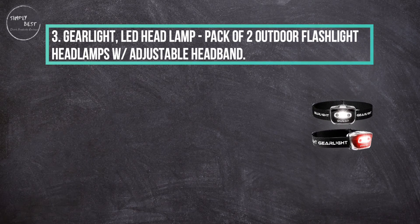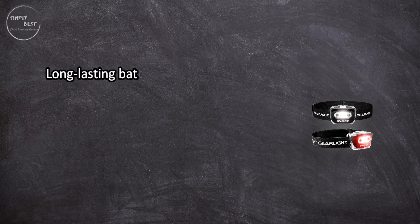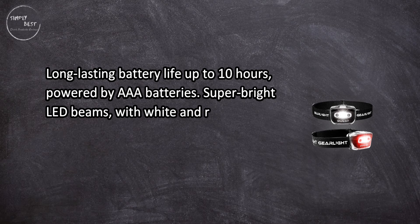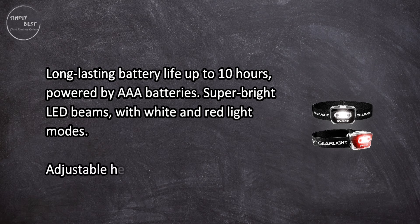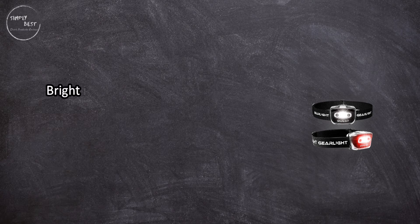At number three, Gearlight LED headlamp, pack of two outdoor flashlight headlamps with adjustable headband. Long-lasting battery life up to 10 hours, powered by AAA batteries. Super bright LED beams with white and red light modes, adjustable headband and 45 degree angle tilting. Bright illumination helpful while camping, hiking, or working in tight, poorly lit spaces.